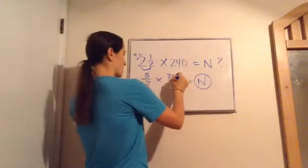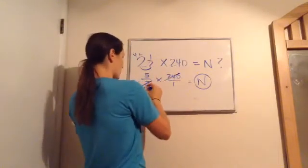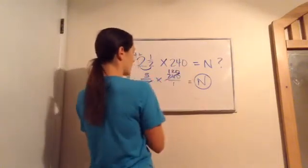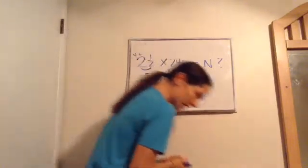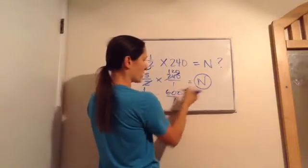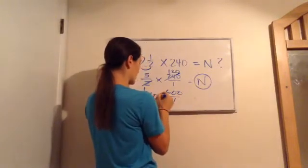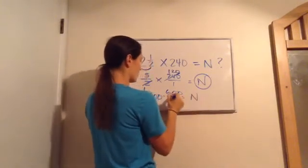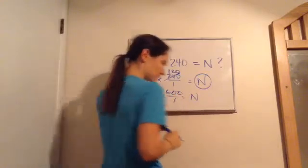So let's go in and reduce, cancel out as much as we can. 2 are going to both of those. And so then 120 times 5, 600. So N equals 600 over 1, which as a number is just 600. N equals 600. See that? Yep.